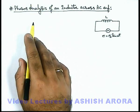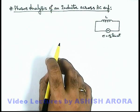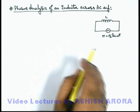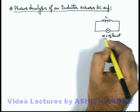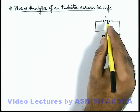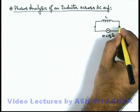Let us now study the phasor analysis of an inductor across AC EMF. We've studied that when a time-varying sinusoidal EMF is applied across an inductor, a current flows through it.